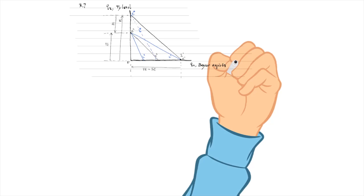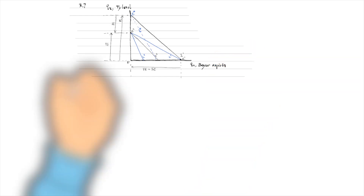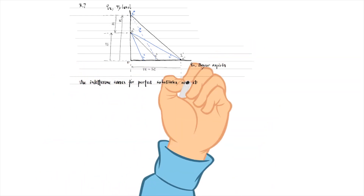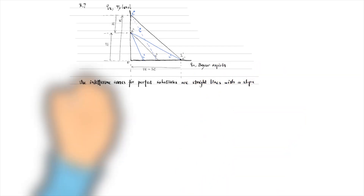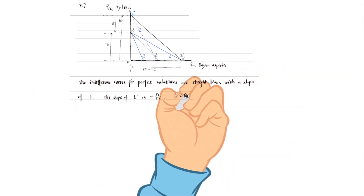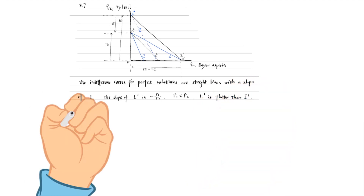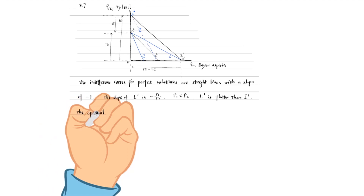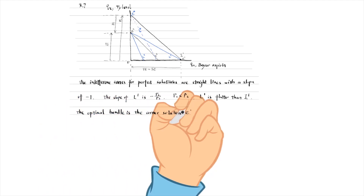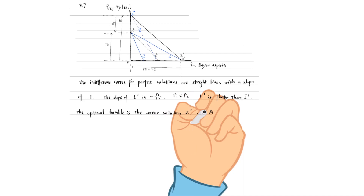The indifference curves for perfect substitutes are straight lines with a slope of minus 1. The initial budget line L1 is flatter than the indifference curves because P1 is smaller than P2, and the price ratio P1 over P2 is smaller than 1. The highest possible indifference curve, I1, touches the budget line L1 at the corner solution E1, where the consumer spends her entire income on Q1, bio-aspirin.